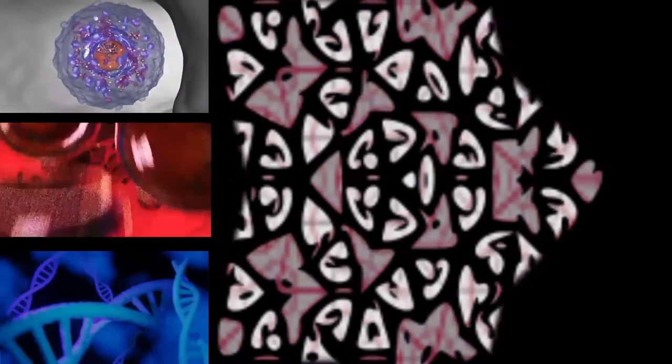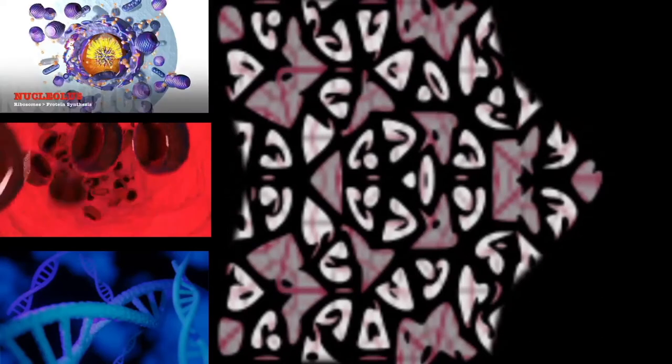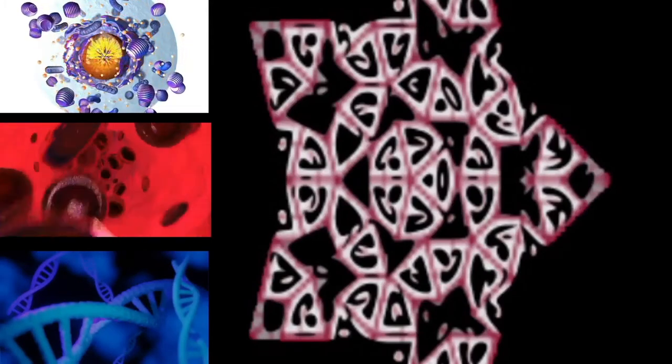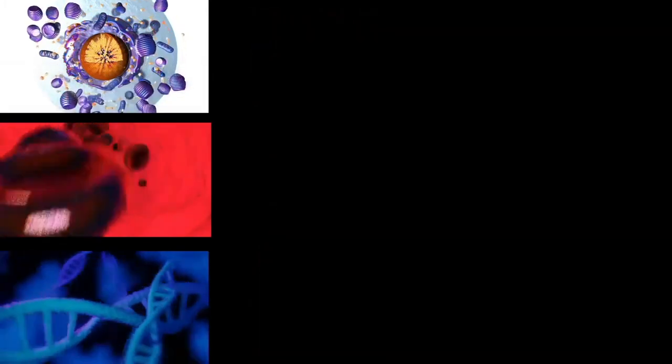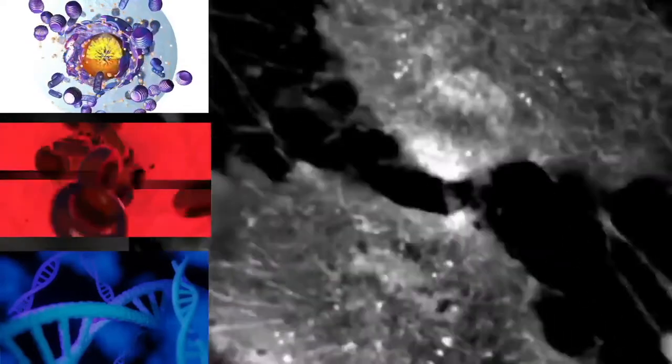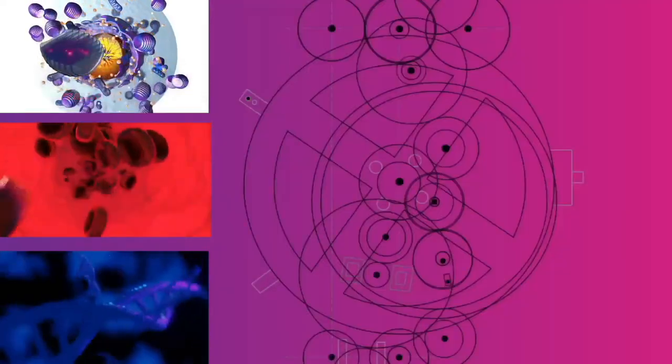They obtain energy by enzymatic action on nutrients absorbed from the environment. The metamonad monocercomonoides has also acquired by lateral gene transfer a cytosolic sulfur mobilization system that provides the iron-sulfur clusters required for protein synthesis. The normal mitochondrial iron-sulfur cluster pathway has been lost secondarily. Plants and various groups of algae also have plastids. Plastids also have their own DNA and are developed from endosymbionts — in this case, cyanobacteria.